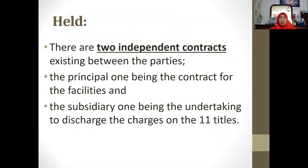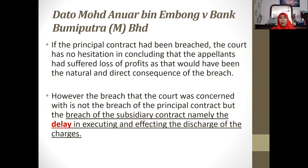When the case was brought to court — this is the lower court, the High Court, before the appeal — the court said there were two independent contracts existing between the parties: the first being the principal contract for the overdraft facility, and the second being a subsidiary contract, namely the undertaking or promise by the bank to discharge the charges on the 11 titles. The court said if the principal contract had been breached, it would be a clear-cut case, but the breach here was of the subsidiary contract — the delay in executing and effecting the discharge of the charges.